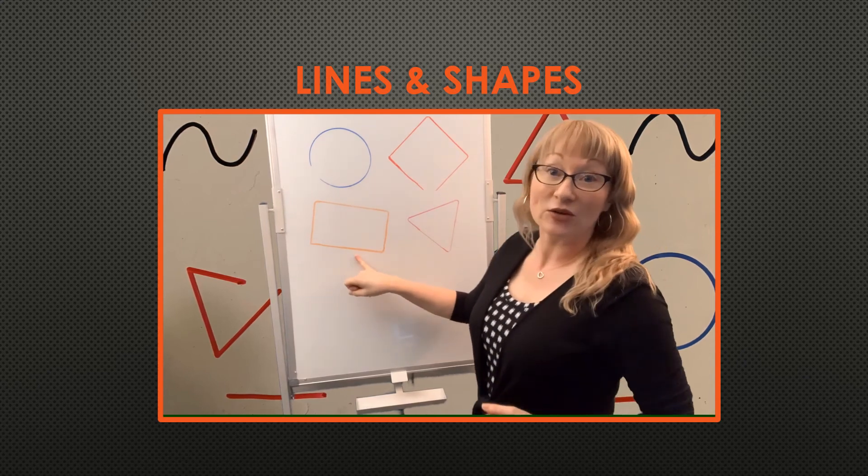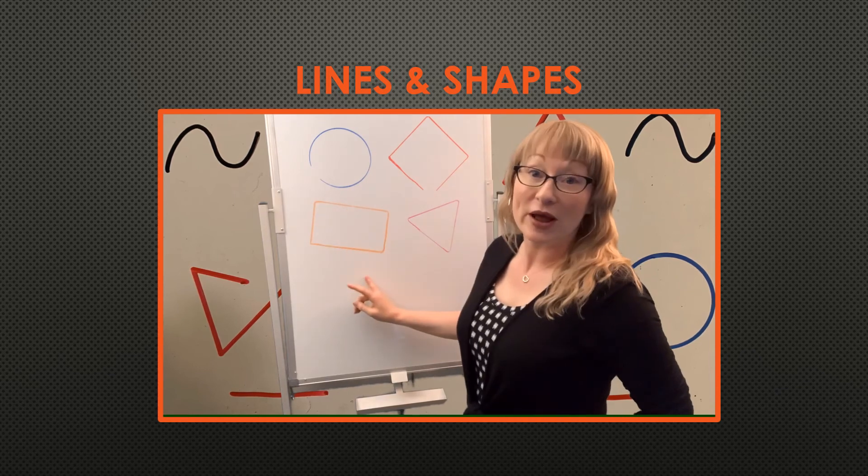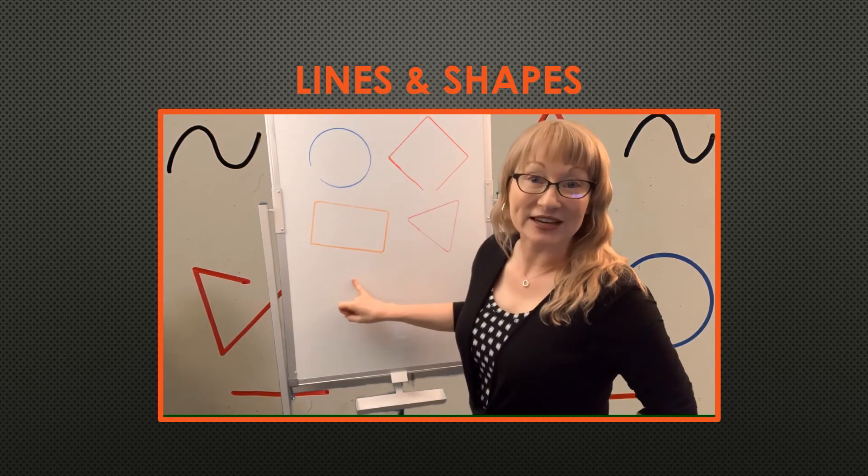Here we have a rectangle. No spaces anywhere. It's lines all the way around that are fully connected. That is a shape.